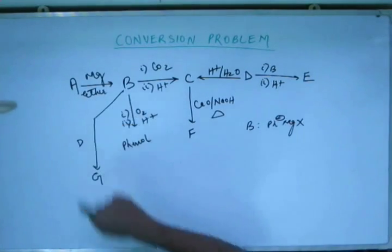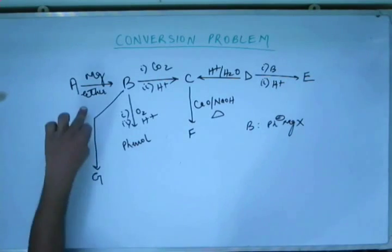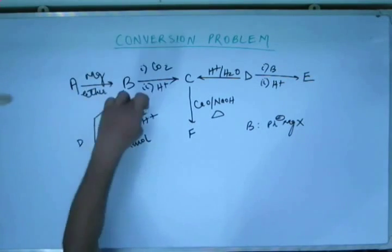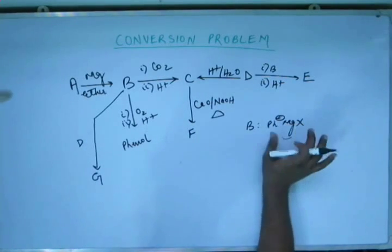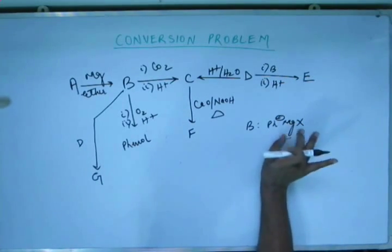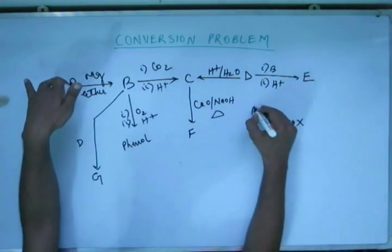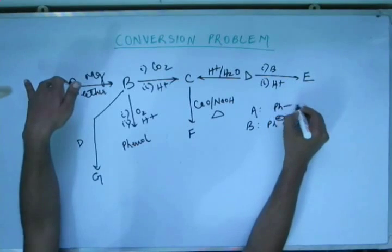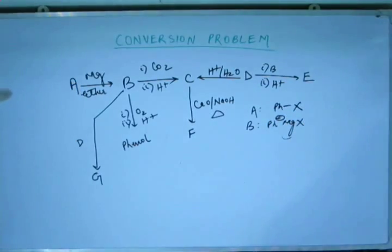Once you have identified B, that will be very easy for us to identify A because that A must be RX that will result in R-MgX. So this Mg must not be there and this R and X must be somehow bonded in A before this R-MgX was formed. So what A must be? A must be PhX. This X could be chlorine, could be iodine, could be bromine.